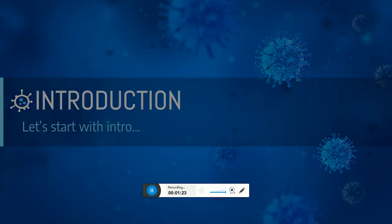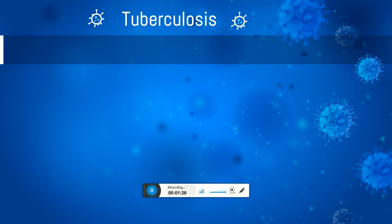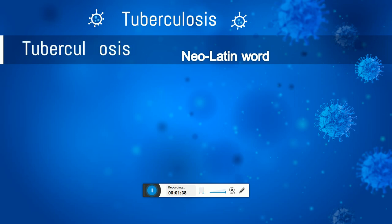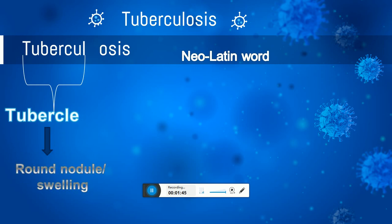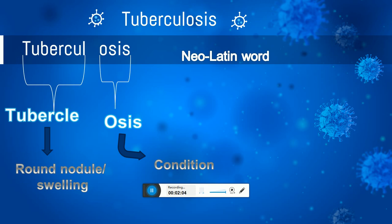Let's start with the introduction. Tuberculosis comes from two Latin words — 'tubercul' and 'osis.' Tubercul means a round nodule swelling, which you can call a granuloma, caused by some causative agents at that particular site. Osis means 'the condition.' So accordingly, the round nodule swelling condition is called tuberculosis. Tuberculosis is a disease.